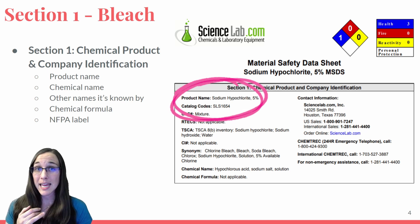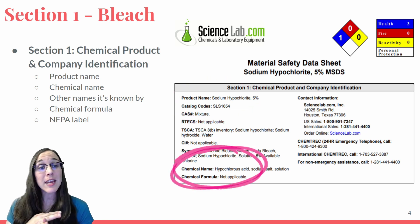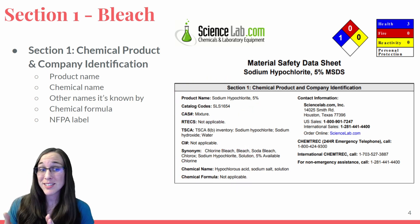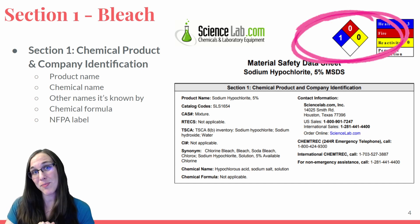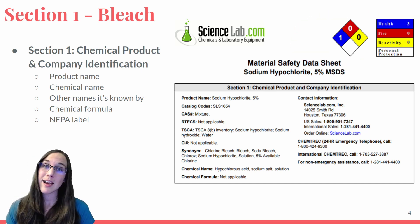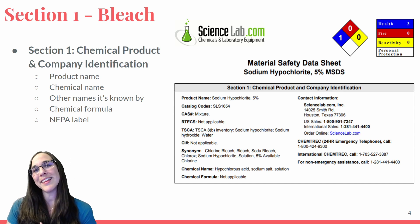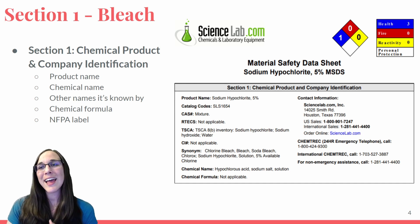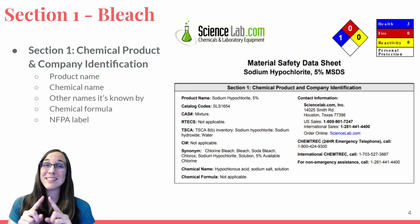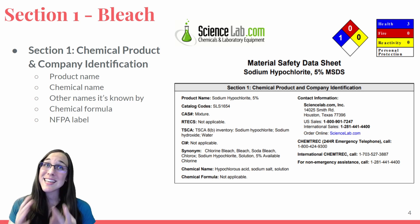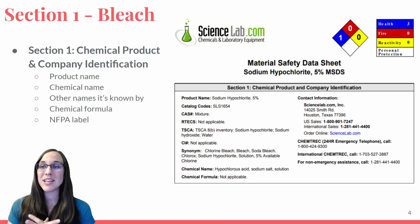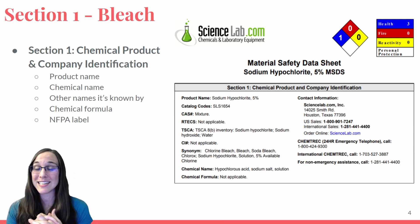Here in section one for bleach of the MSDS, we can see the product name, its chemical name, any other names it's known by, the chemical formula, and the NFPA label. If you don't know what an NFPA label is, please check out the linked video and learn what that little diamond — blue, red, yellow, and white — stands for, and what each of those quadrants means for easy identification of chemical safety.